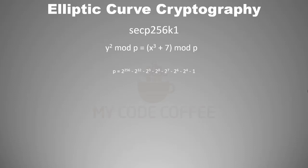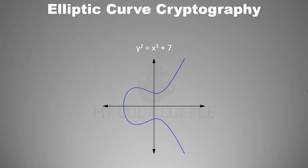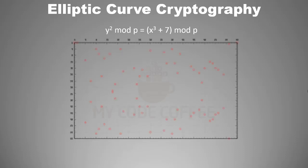Now without this modulo p the equation would simply be y squared equals to x cubed plus 7, which is an elliptical equation over real numbers and the resulting graph is an elliptical as shown. However, modulo p indicates that this curve is over a finite field of prime order p, where p is a very large prime number, and what we get out of this equation is not really an elliptical but a pattern of dots.